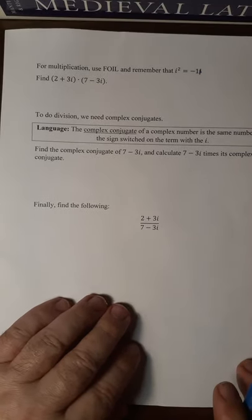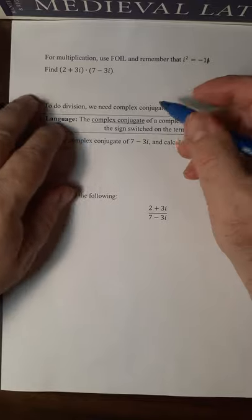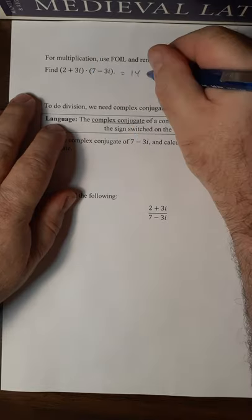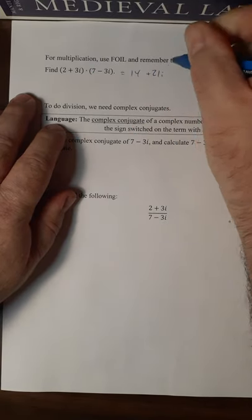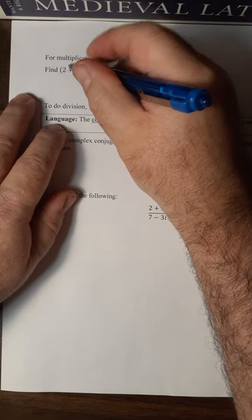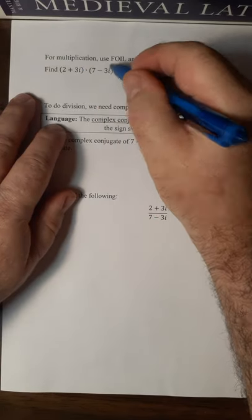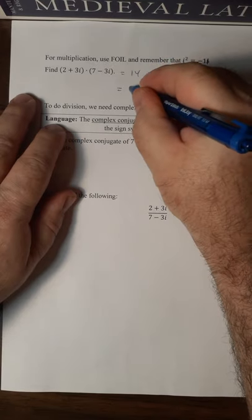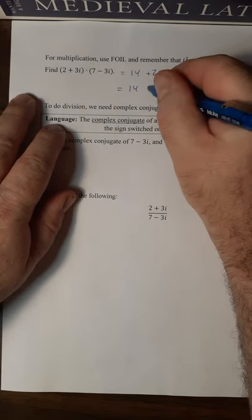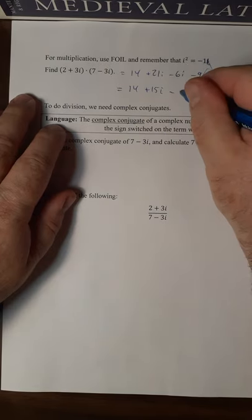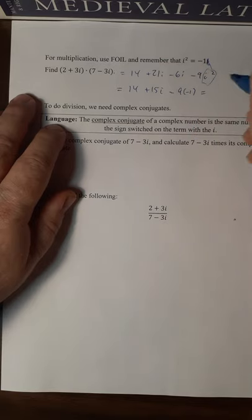Multiplication, use FOIL, and remember that i squared equals minus 1. So if we multiply this out, first, 2 times 7 is 14. Inner, 3i times 7 is 21 times i. Outer, oh, I got outer and inner mixed up, doesn't matter. 2 times minus 3i is minus 6i. And then last, 3i times minus 3i is minus 9i squared. We can simplify that a little bit. 21i minus 6i is 15i. And keep in mind that this i squared equals minus 1. So this is minus 9 times minus 1. So it becomes 14 plus 15i plus 9. And at the end of the day, that's 23 plus 15i.